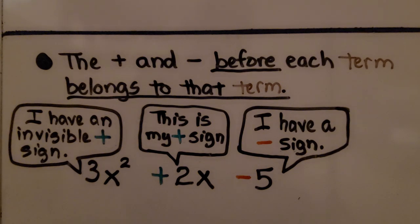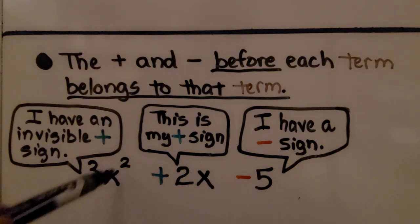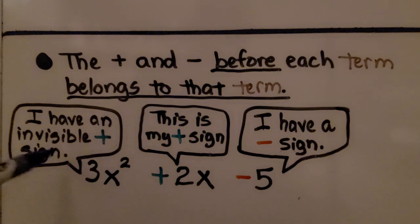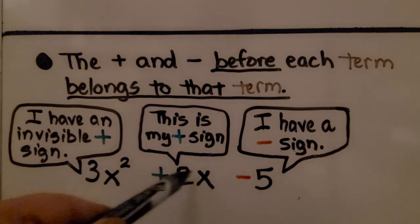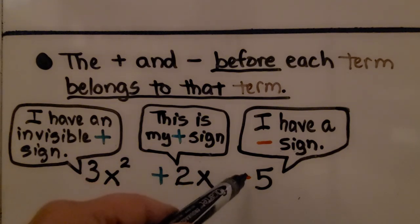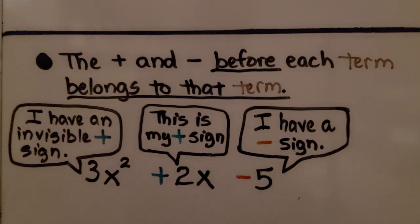Now, this part is very important. The plus and minus before each term belongs to that term. So we have 3x raised to the second power. This 3x raised to the second power has an invisible plus sign before it. When it's positive, we don't need to write the plus sign. This plus sign belongs to the term 2x, and this minus sign belongs to the 5.